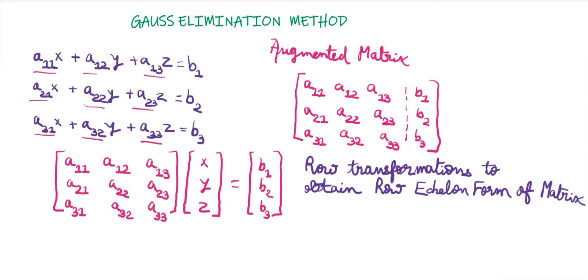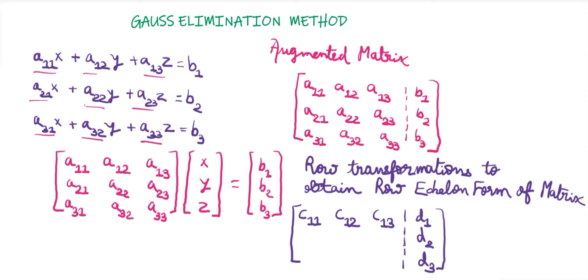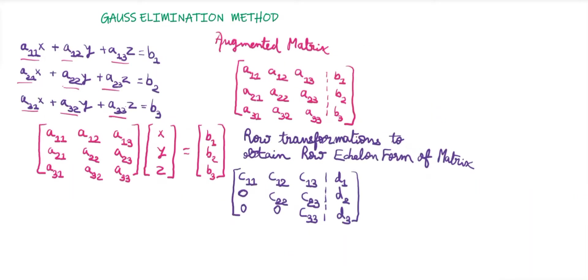If you are not aware of row echelon form and reduced row echelon form, I have created a separate video explaining both terms — you can find the link in the description. After performing row transformations, suppose we convert the matrix to echelon form and get values C11, C12, C13 with corresponding right-hand side values D1, D2, D3.